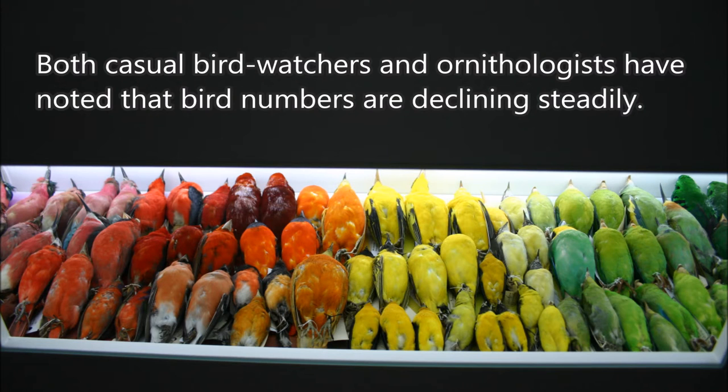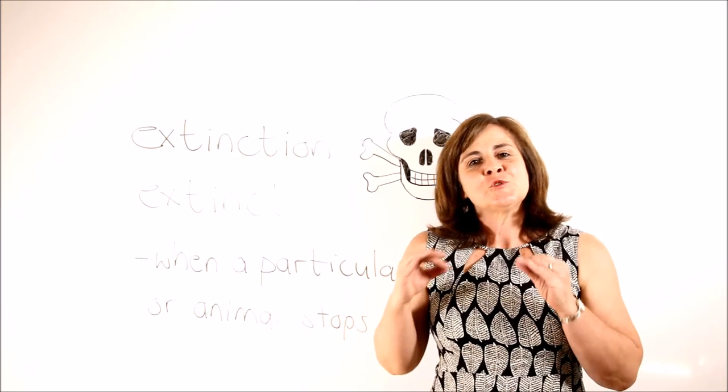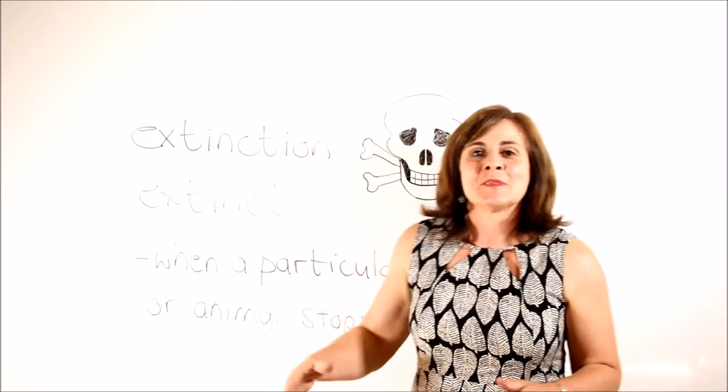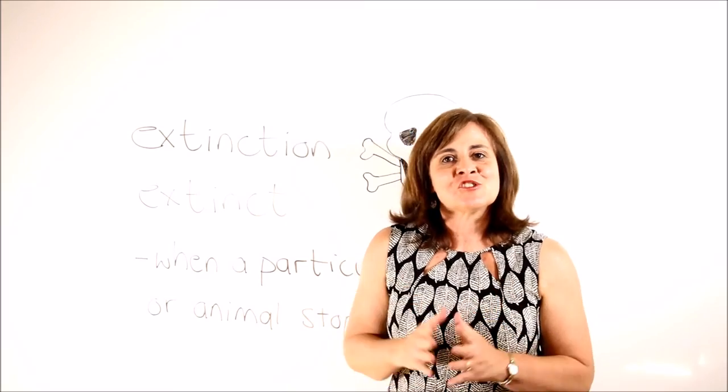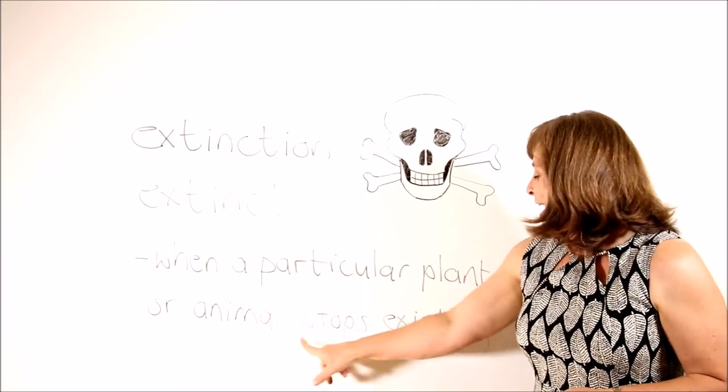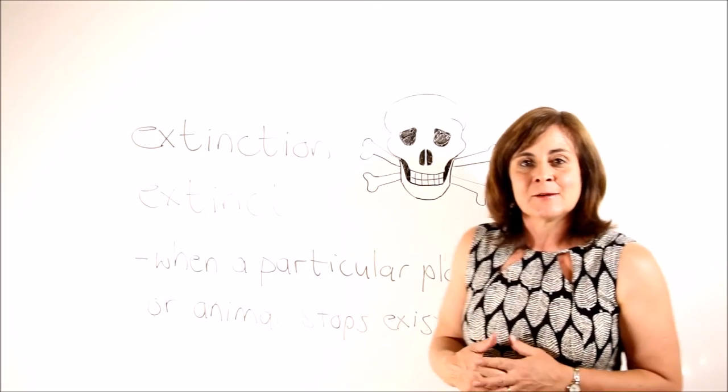Both casual bird watchers and ornithologists have noted that bird numbers are declining steadily. These dwindling or declining numbers ultimately lead to extinction if the process is not stopped. Extinction is when a particular plant or animal stops existing, and when no members of that species are left we say that the species is extinct.